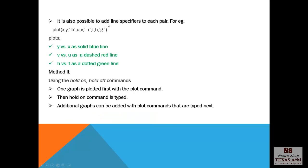It is also possible to add line specifiers to each pair. So plot x,y dash b, u,v dash red, and t,h a dotted green line. Method two is using the hold on, hold off commands. One graph is plotted first with the plot command. Then hold on command is typed. Additional graphs can be added with plot commands that are typed next.